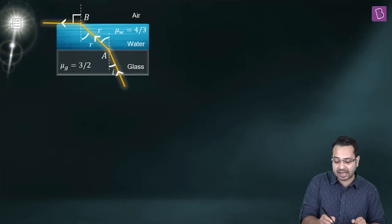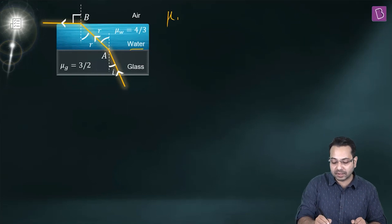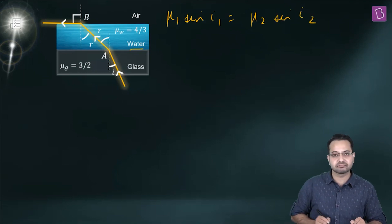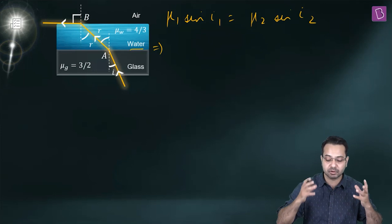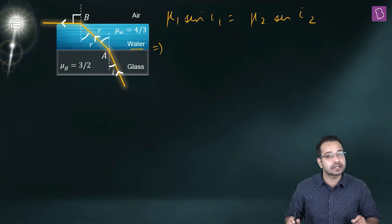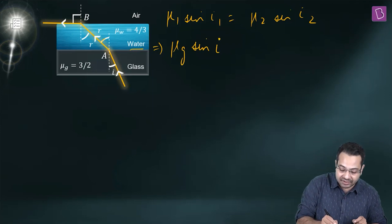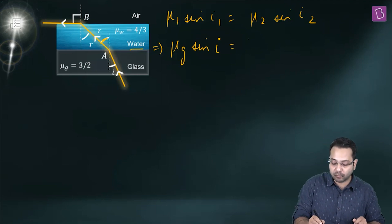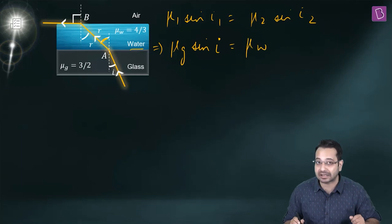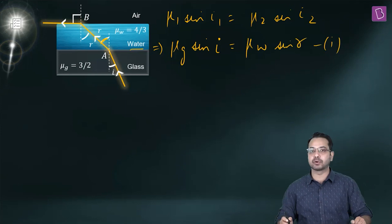For refraction at the glass-water boundary, applying Snell's law: μ₁ sin i₁ = μ₂ sin i₂. The incident ray is in the glass medium, so we write μ_glass × sin i. Let the angle of refraction be r, so this becomes μ_water × sin r. We note this as equation number one.